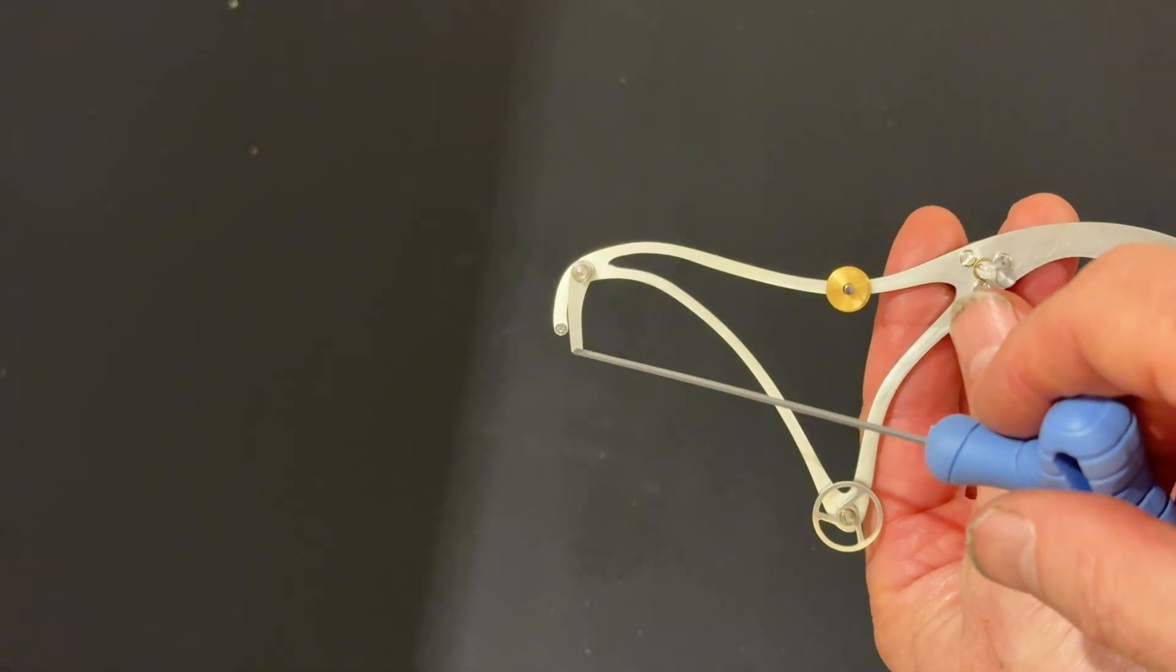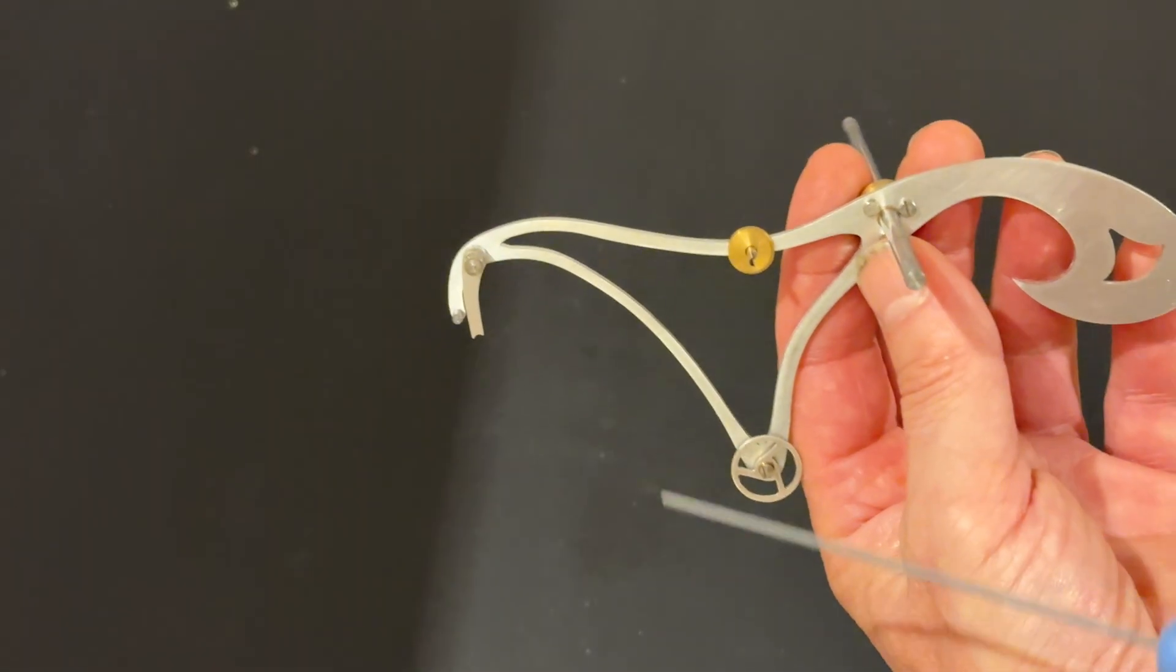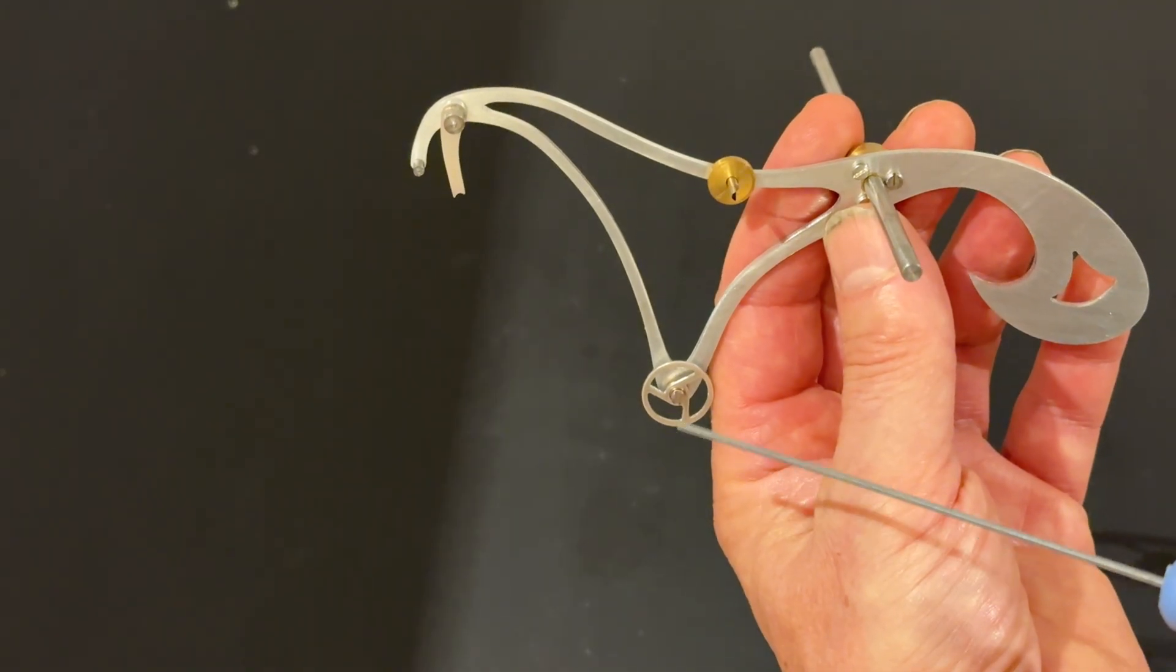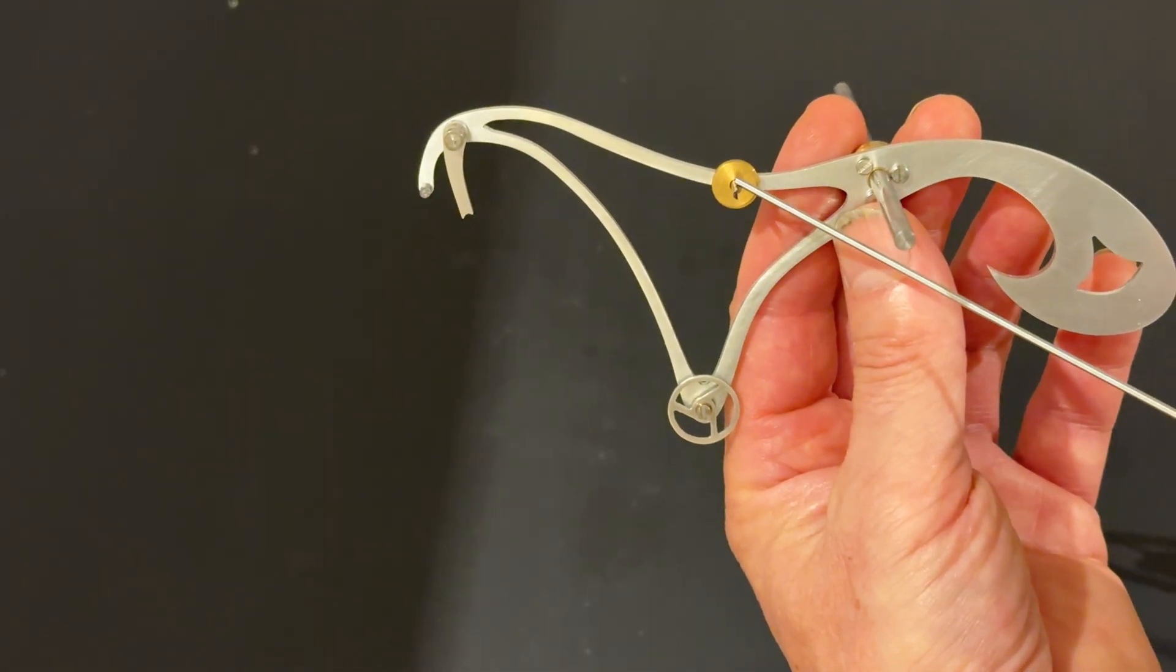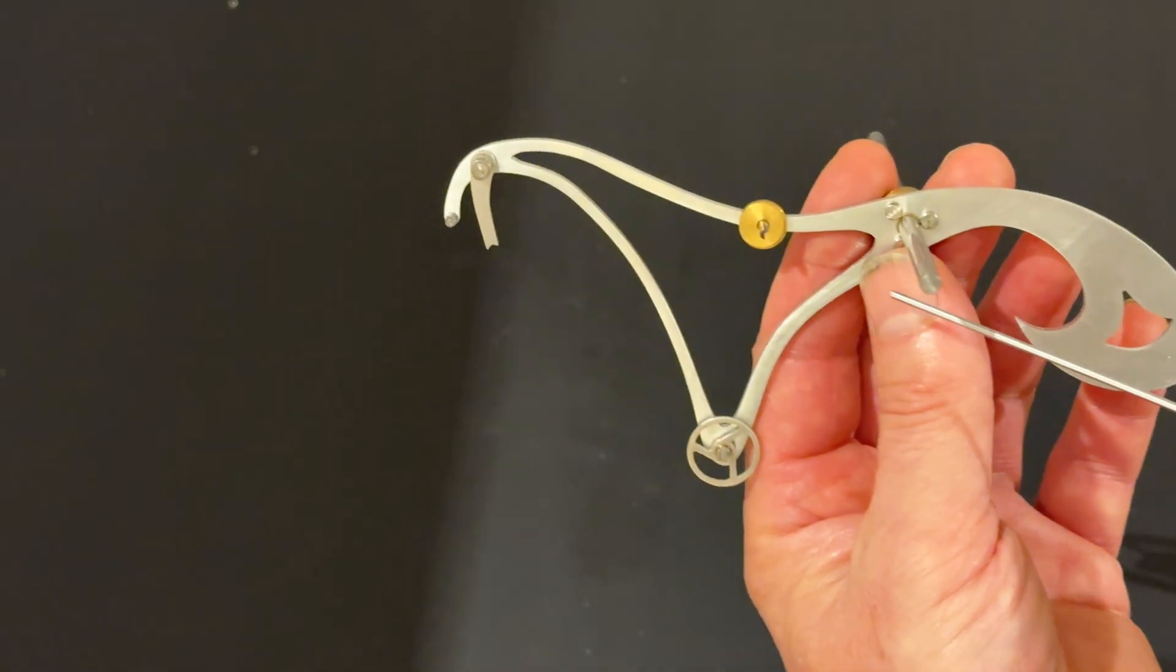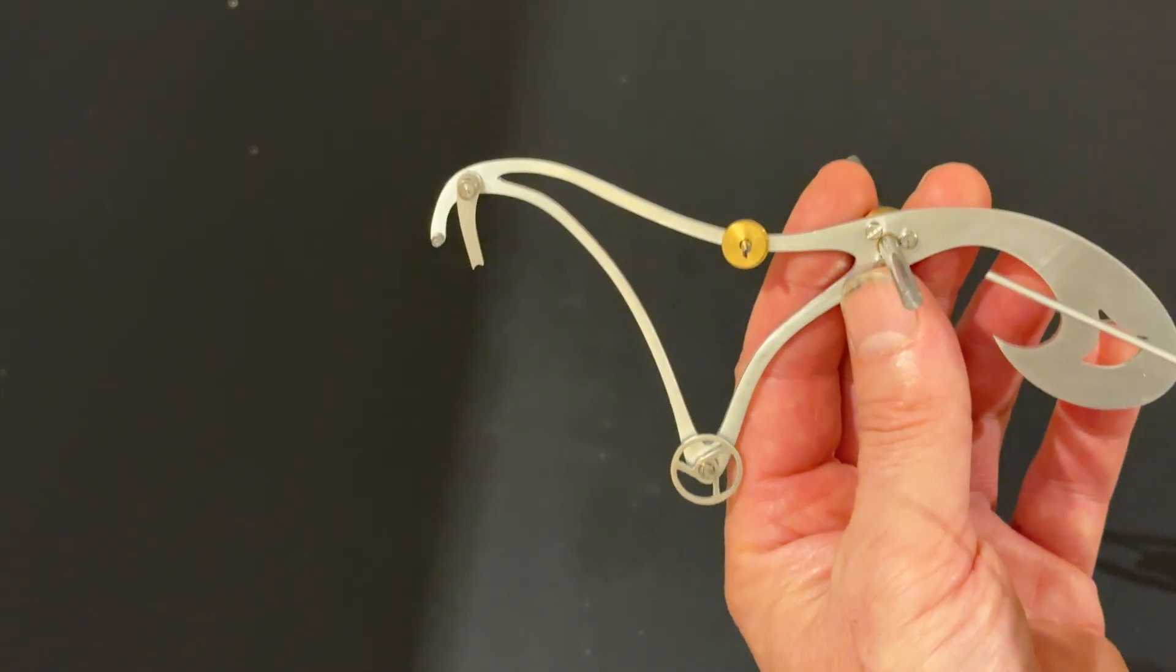This element is attached to the escape wheel and it rises as the escape wheel rotates and this is the detent which allows the rotating mechanism of the remontoir to rotate by one revolution.